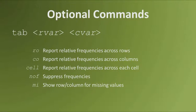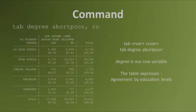I'll discuss five subcommands. The subcommand ro, short for row, asks Stata to report relative frequencies across rows. In this table, degree is our row variable. Using the ro command, we get the percentage of people in each educational category who agree or disagree with abortion for reasons of poverty.